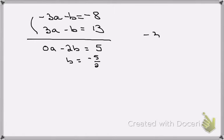So, I get minus 3a plus 5 halves is equal to minus 8, and 8 in terms of halves would be 16 halves.